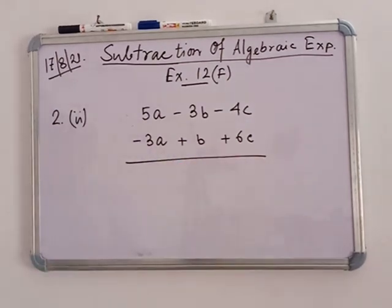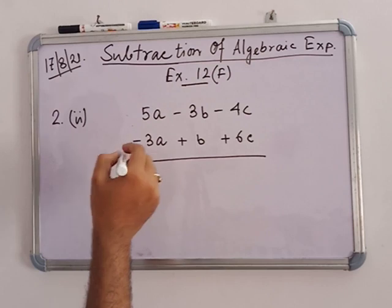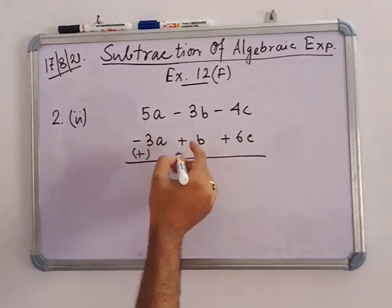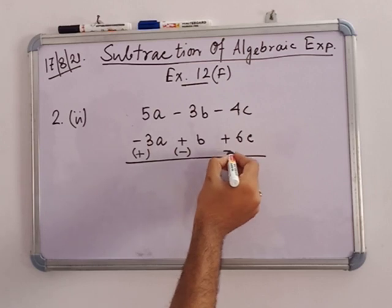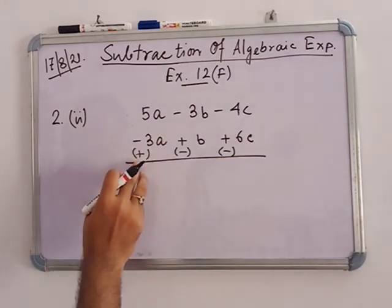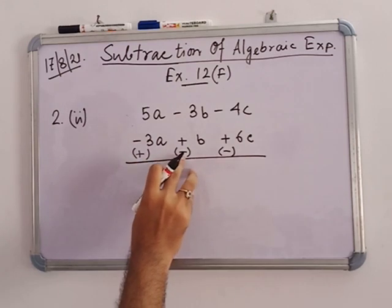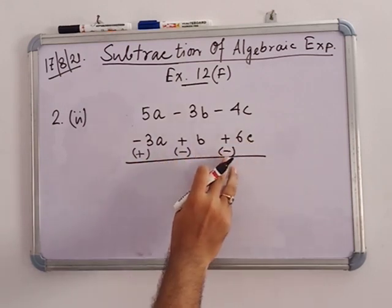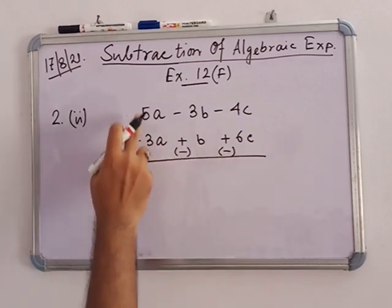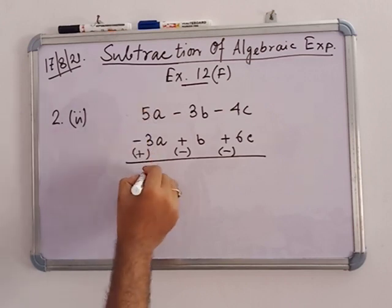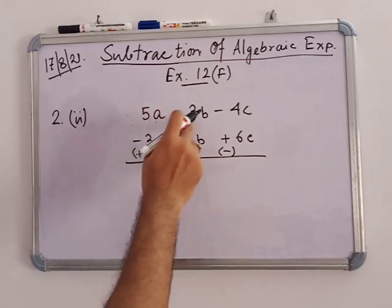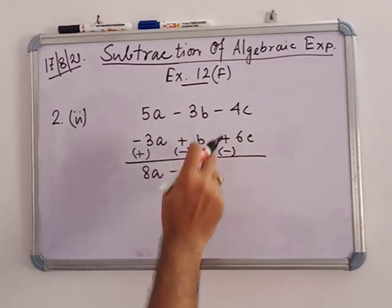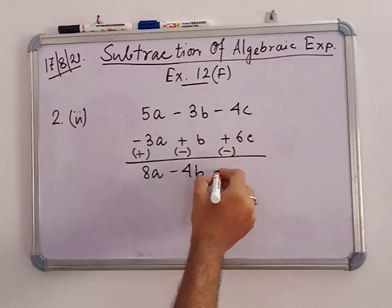When subtracting, we change the sign of the bottom row because the subtraction sign multiplies into the next sign. So minus 3a becomes plus 3a, plus b becomes minus b, and plus 6c becomes minus 6c. Then: 5a plus 3a equals 8a; minus 3b minus b equals minus 4b; and minus 4c minus 6c equals minus 10c.